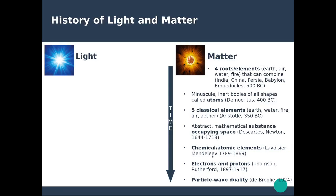It took until the French Revolution for Antoine Lavoisier to introduce the concept of chemical and atomic elements. Lavoisier identified 33 elements forming all matter, which was further expanded by Dmitri Mendeleev in 1869 with his famous periodic table. It was only in the 20th century that J.J. Thomson and Ernest Rutherford determined that atoms were not the most basic elements, but were composed of smaller particles — electrons and protons. Quantum mechanics then revealed that matter has a particle-wave duality.